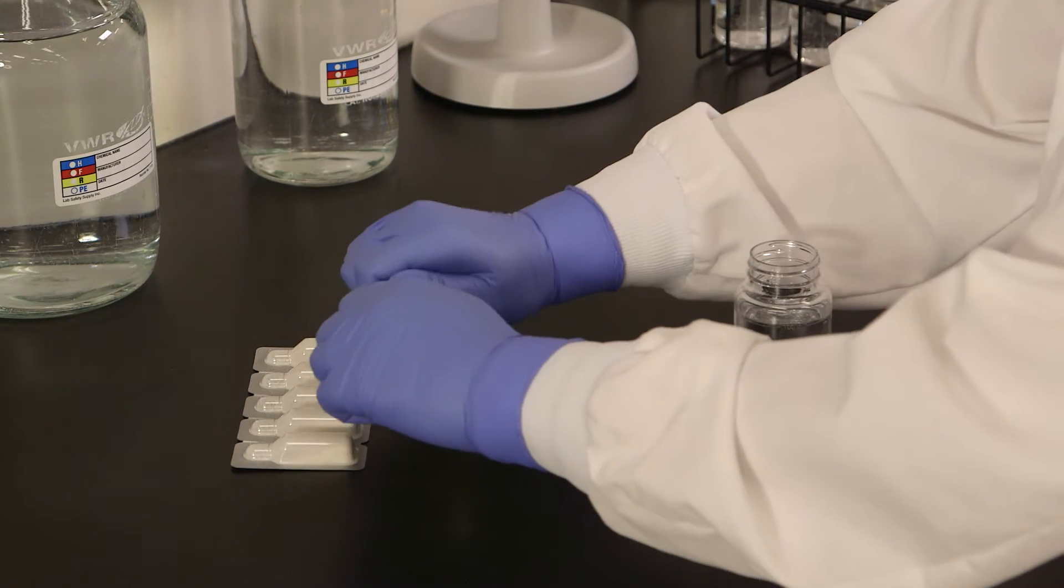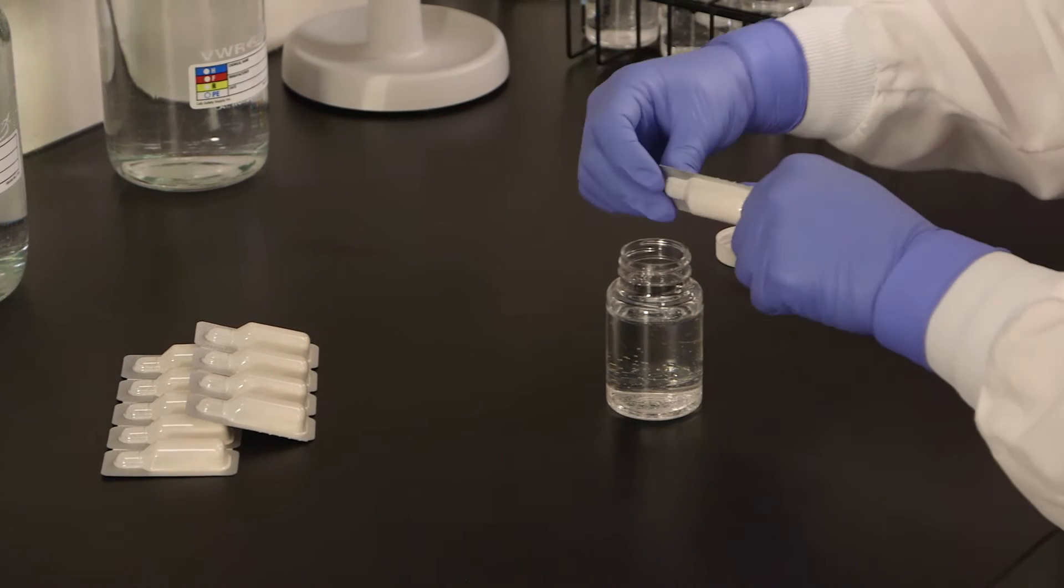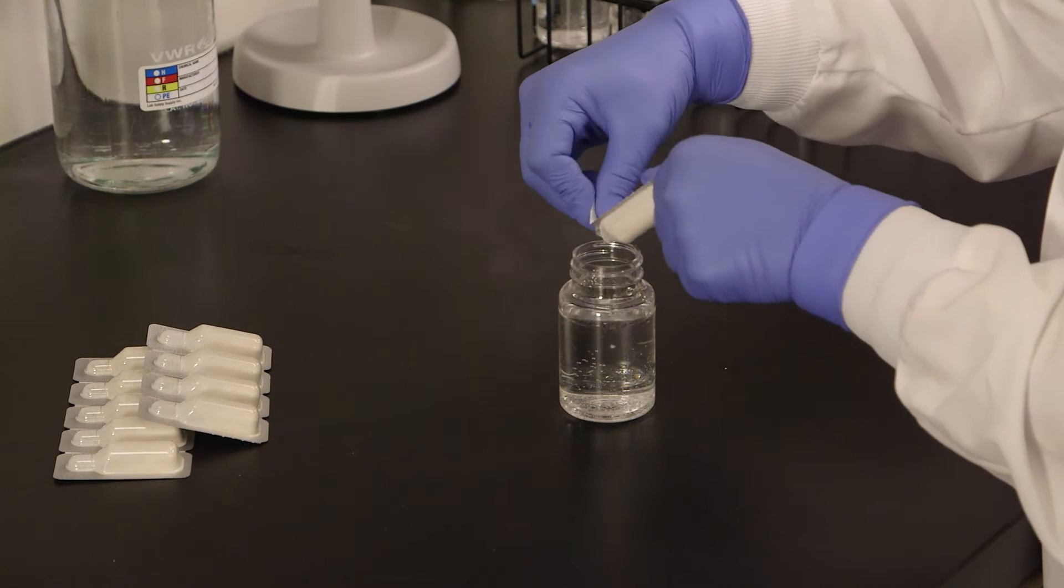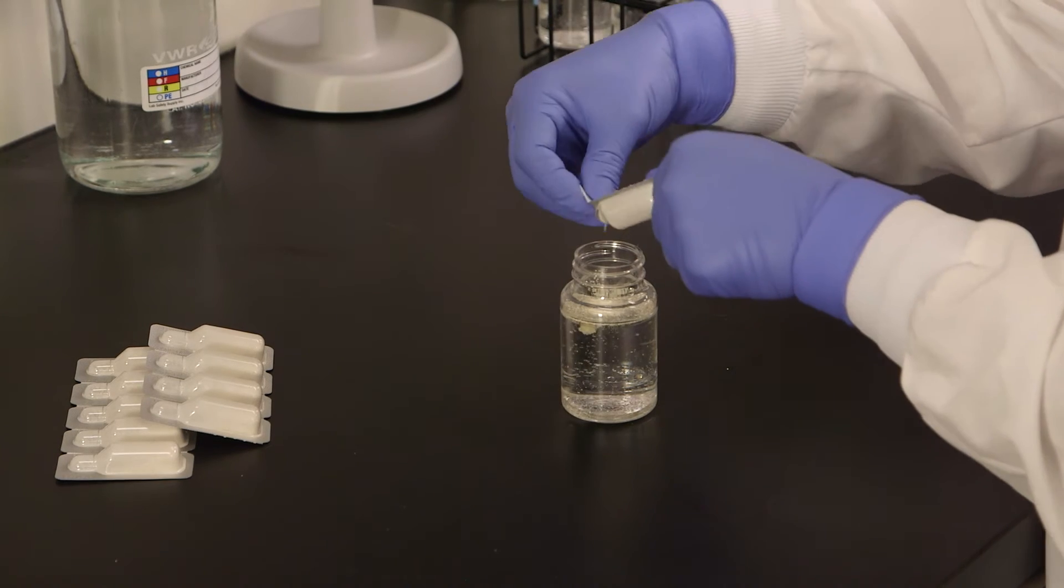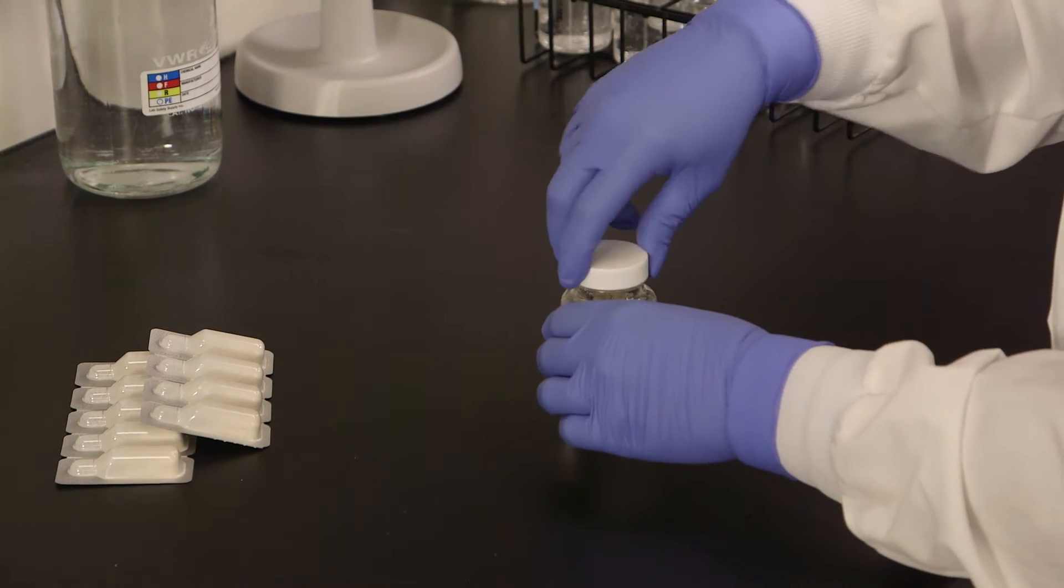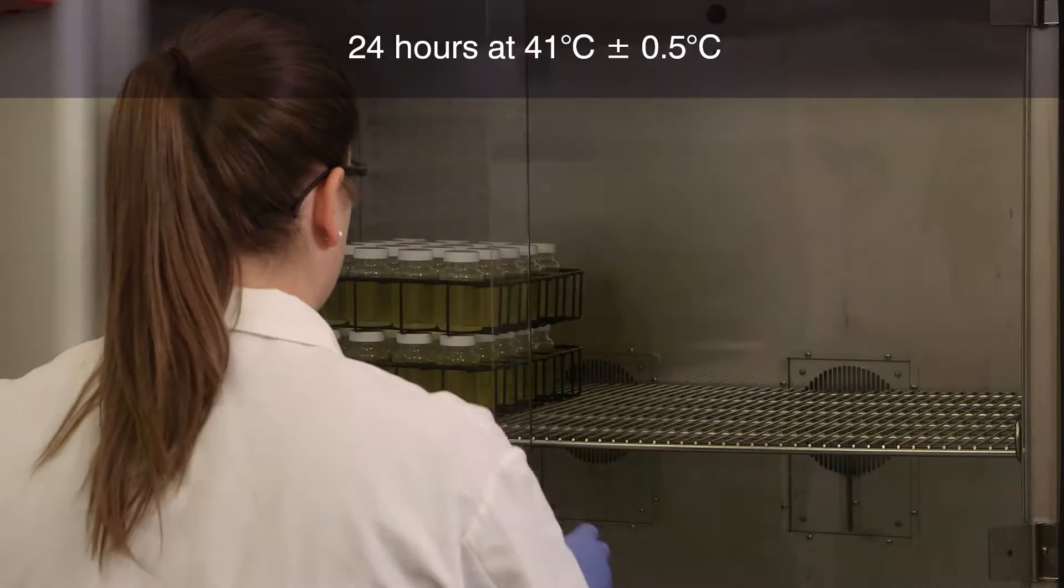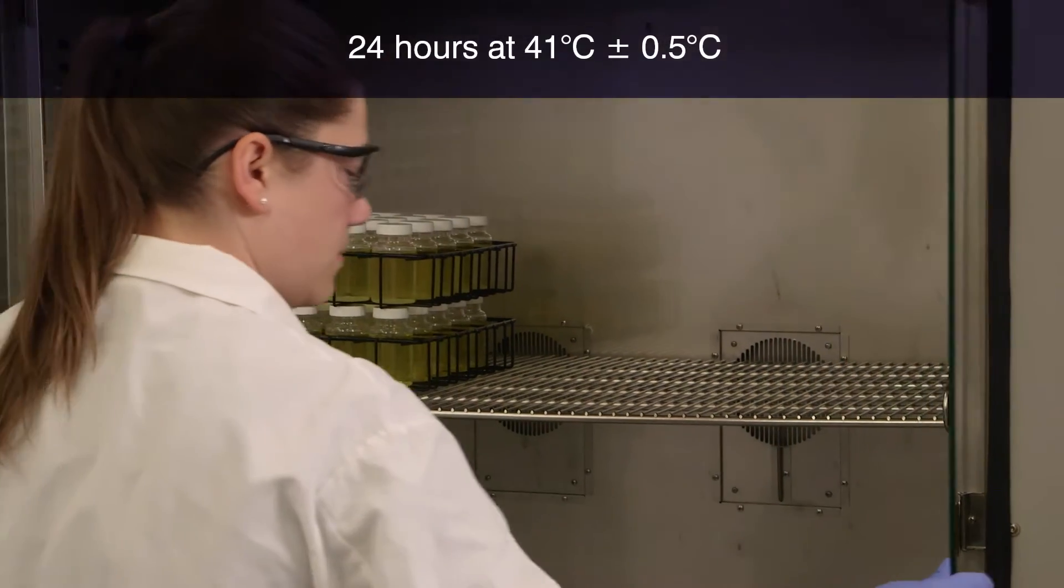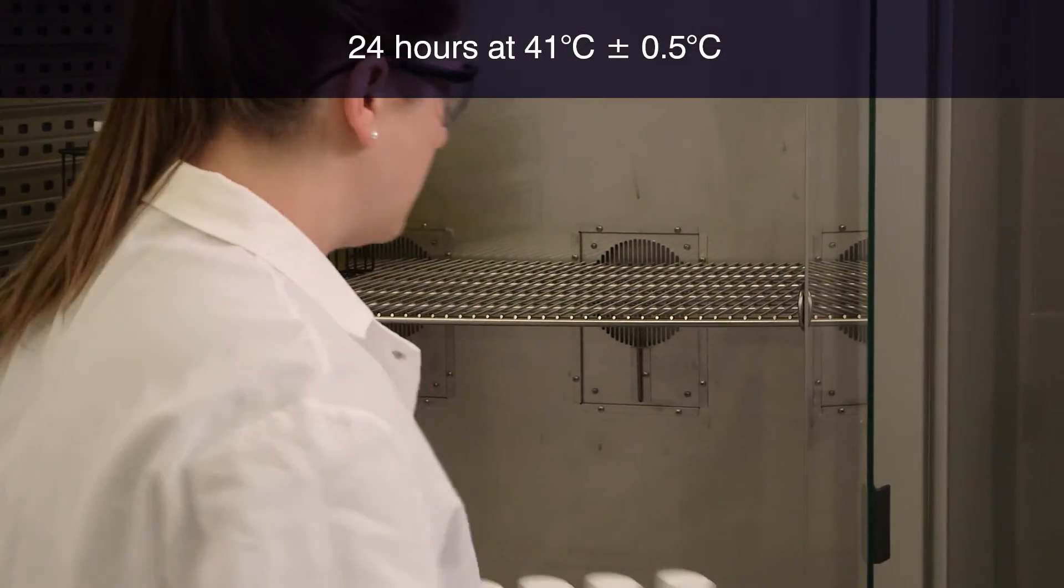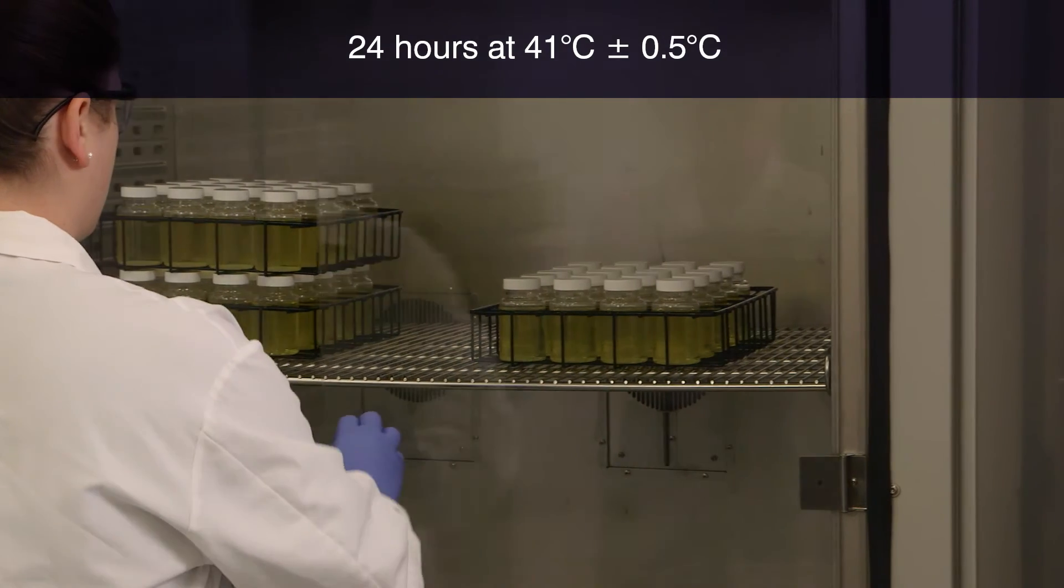Separate one reagent pack from its strip, taking care not to accidentally open the other packs. Snap open the reagent pack and pour the powder into a 100 ml water sample. Cap the vessel and shake to dissolve the Enteralert powder. Some particles may remain undissolved. Incubate for 24 hours at 41 degrees centigrade, plus or minus 0.5 degrees centigrade, or according to your local regulations.